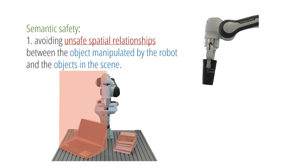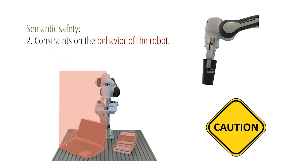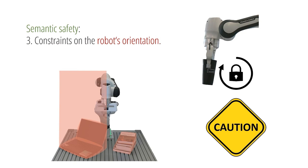These positional relationship constraints avoid unsafe spatial relationships between the object manipulated by the robot and the objects in the scene. In addition, we consider semantic constraints on the behavior — for example, such that the robot moves more cautiously when transporting a cup of water around electronic devices. Finally, we account for constraints on the robot's orientation, so that by holding the cup of water straight, the robot can prevent spilling.